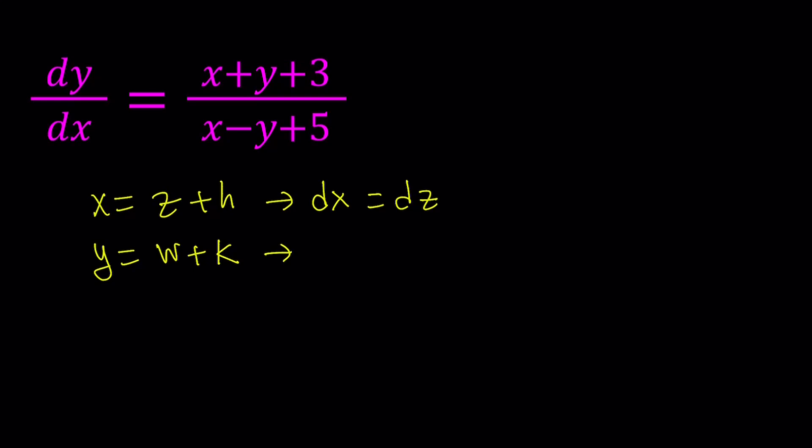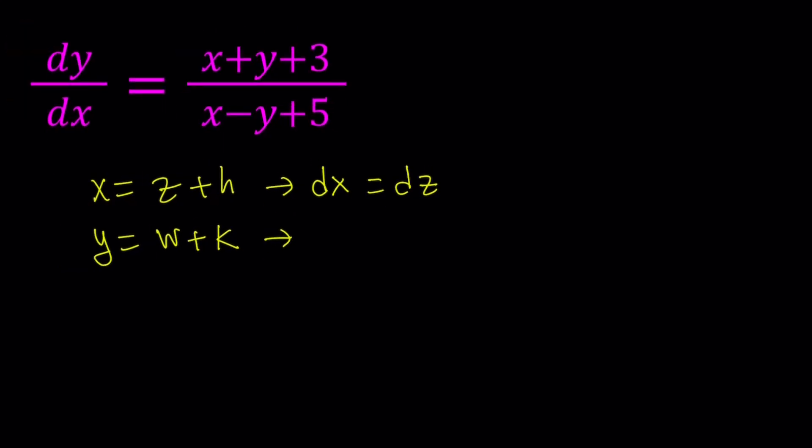And the same thing goes here, if y is equal to w plus k, in other words, w and y differ by a constant, then their differentials are equal. And by the way, d is just the differential, which is something that comes from the derivative. So, from here we get dy equals dw. Now, we're going to go ahead and plug this in.